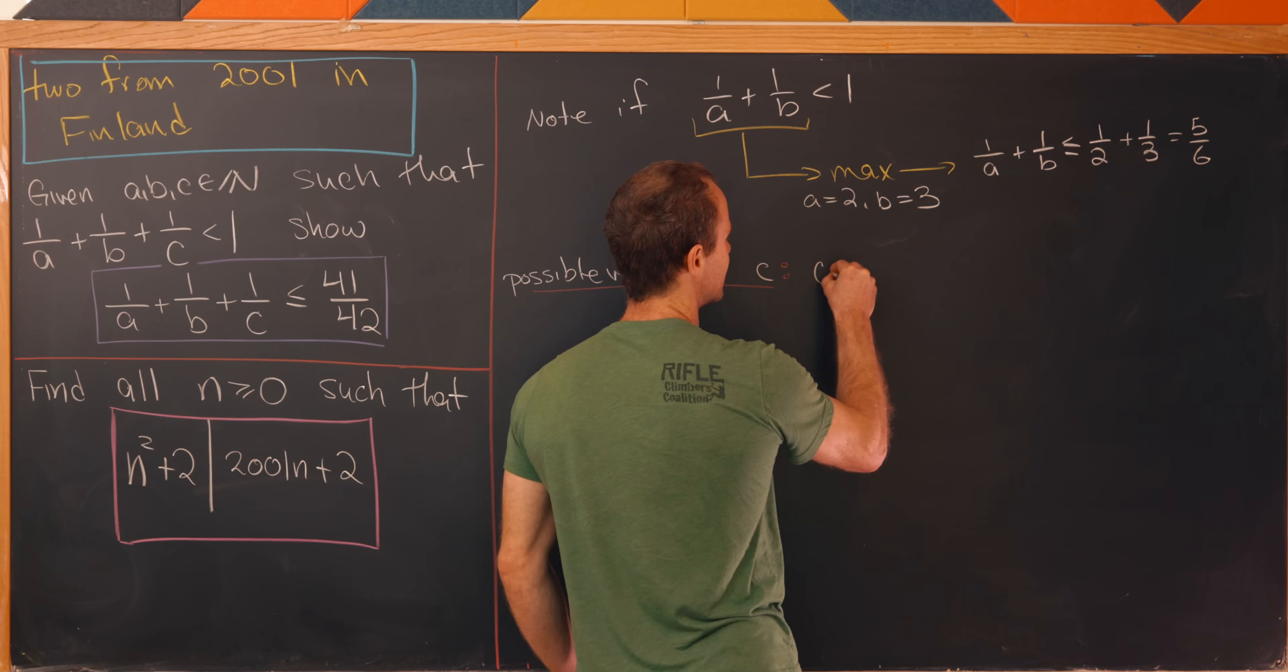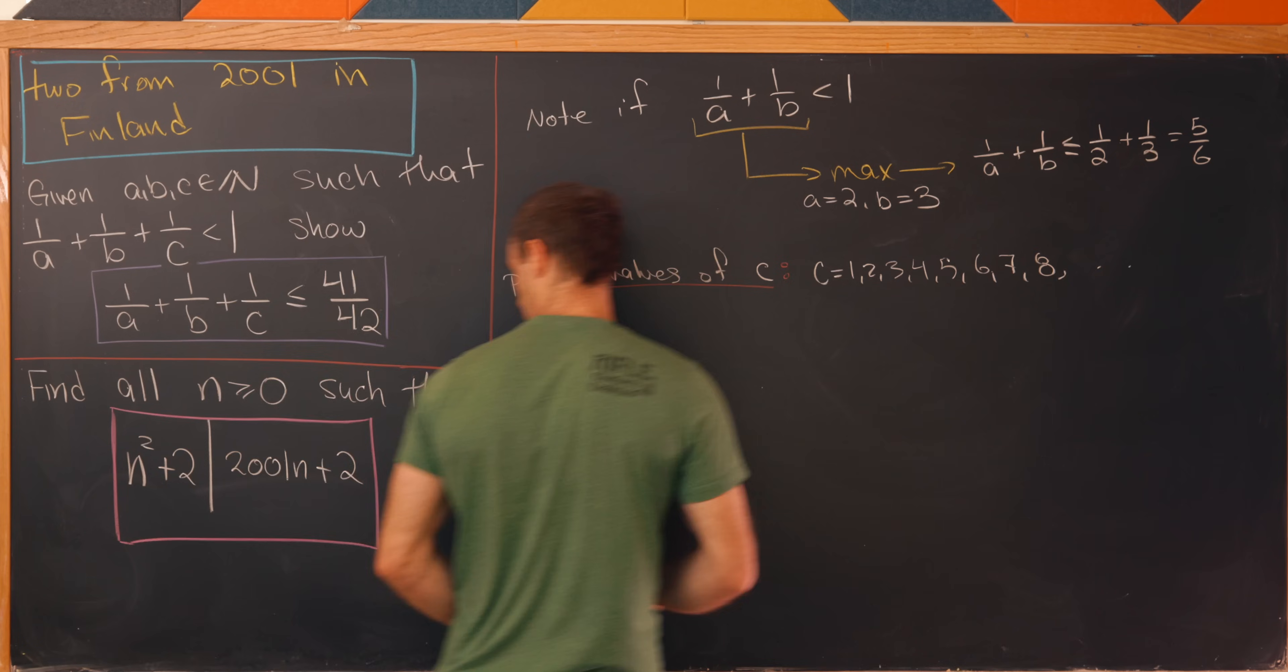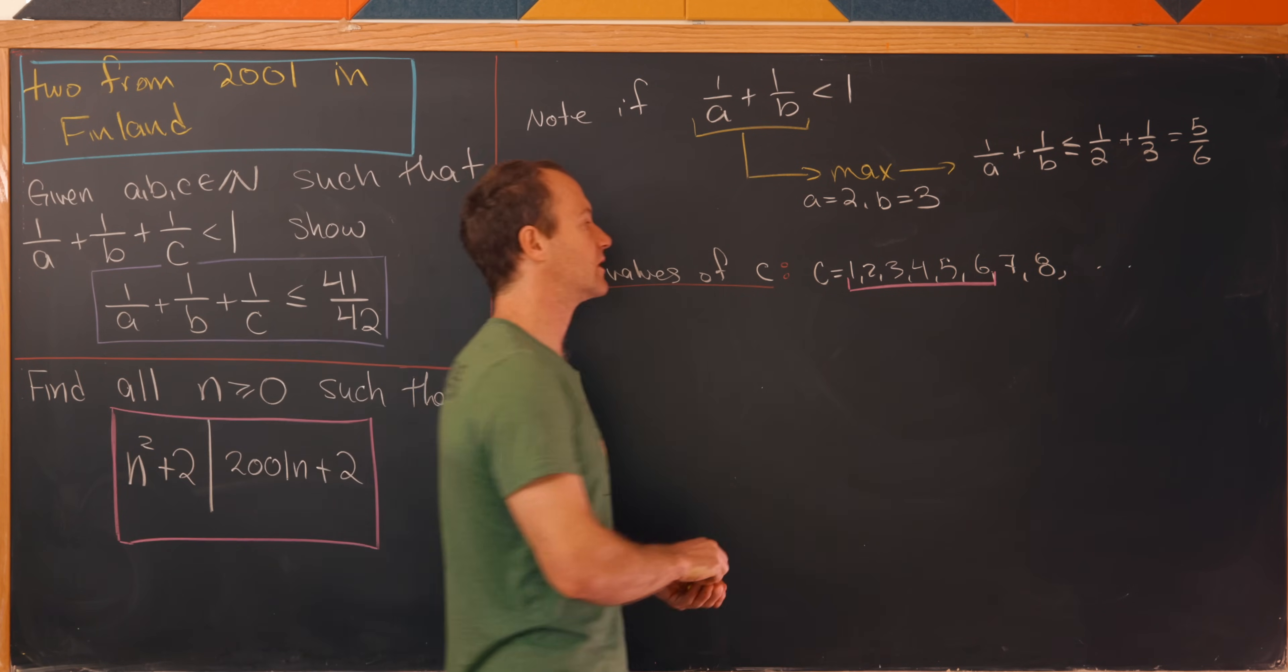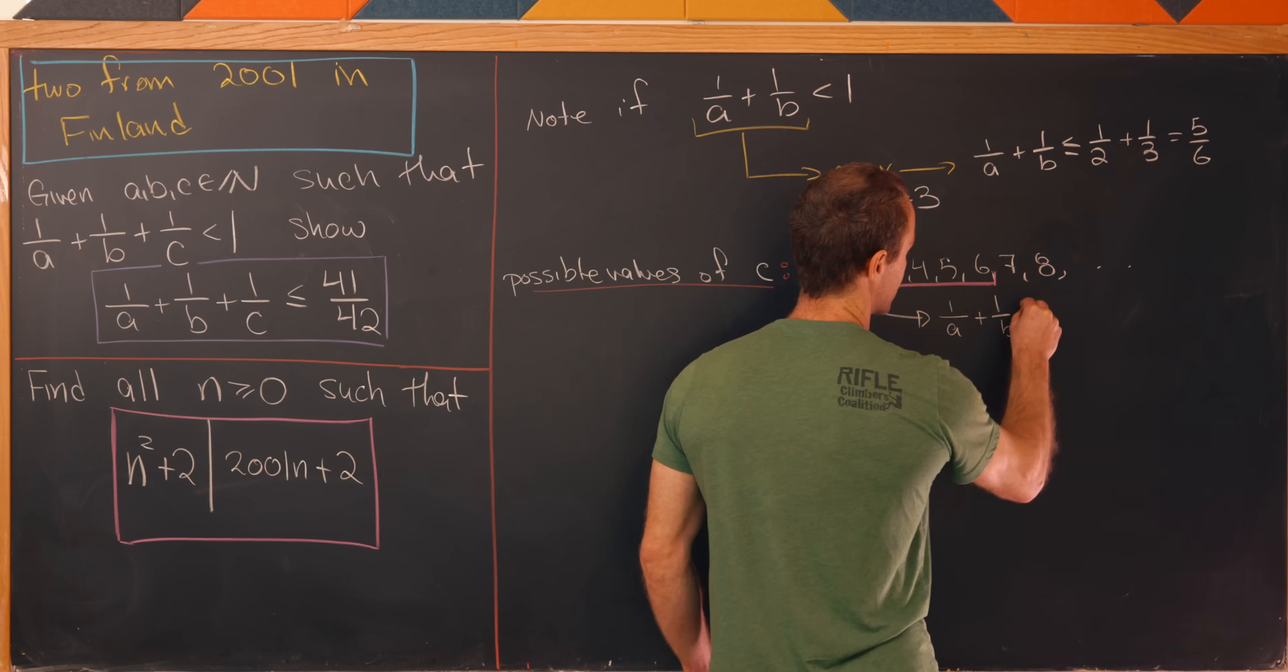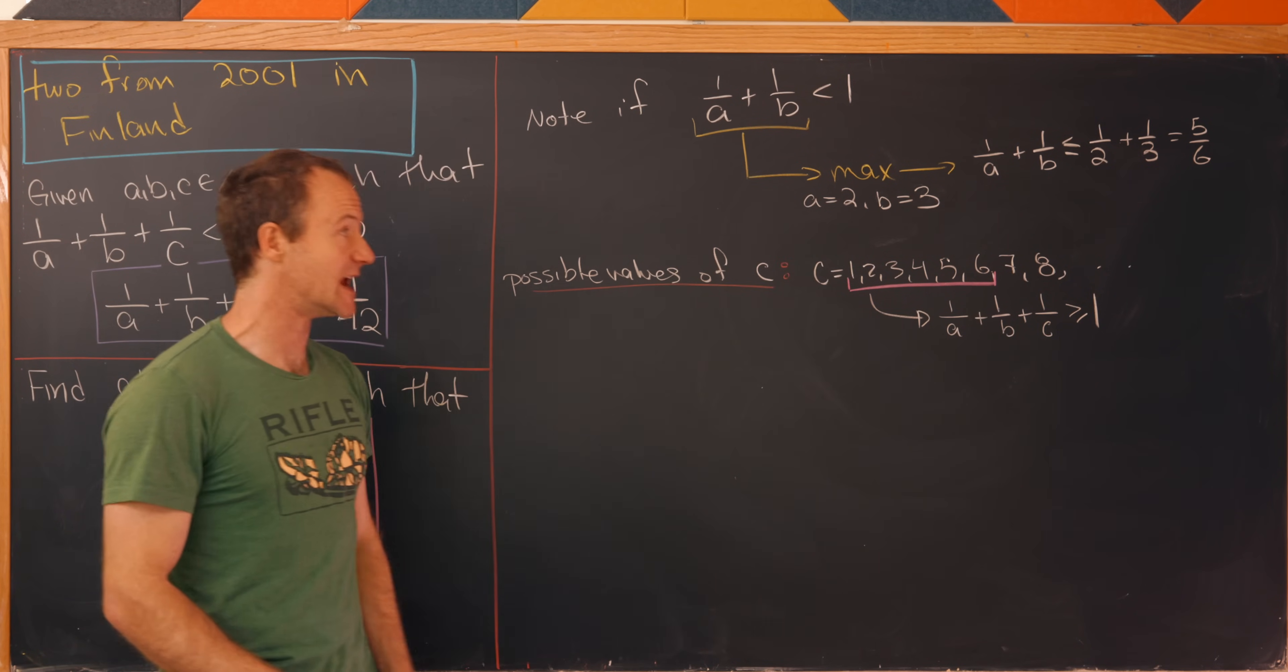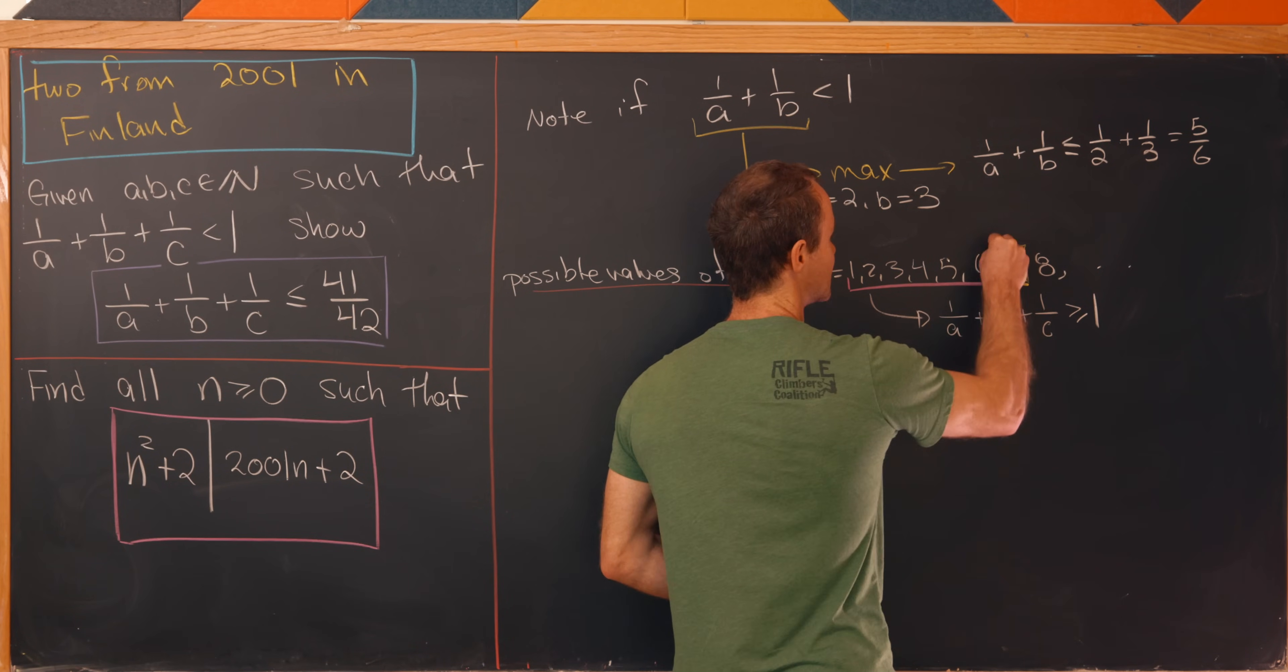Now let's look at possible values of C given that we've already achieved this maximum. Well, you could just very naively say that C could be 1, 2, 3, 4, 5, 6, 7, 8, so on and so forth. But what you'll notice is that all of these 1, 2, 3, 4, 5, 6 will give you a sum which is too large. So we'll get the sum 1/A + 1/B + 1/C is bigger than or equal to 1 in this case. Of course, that's built off of this maximum state where we have A equals 2 and B equals 3.